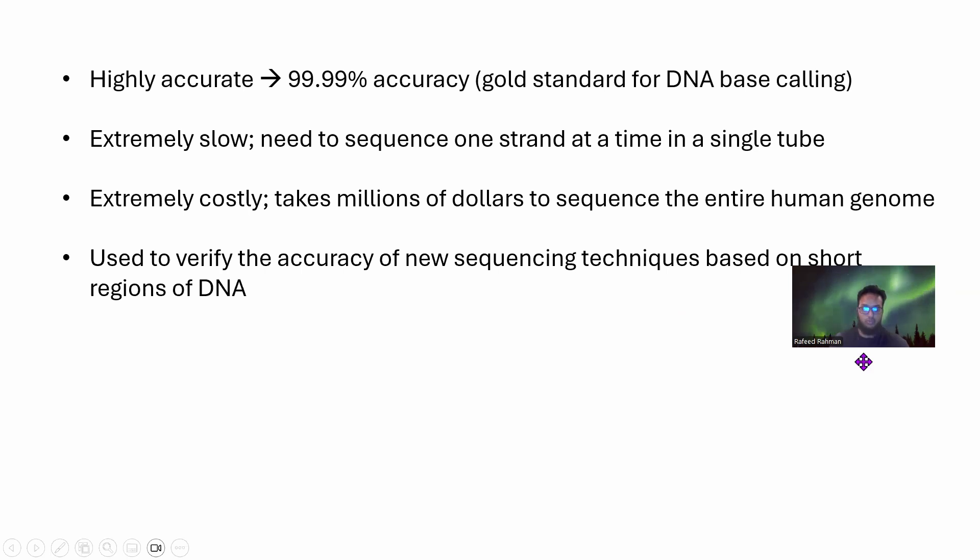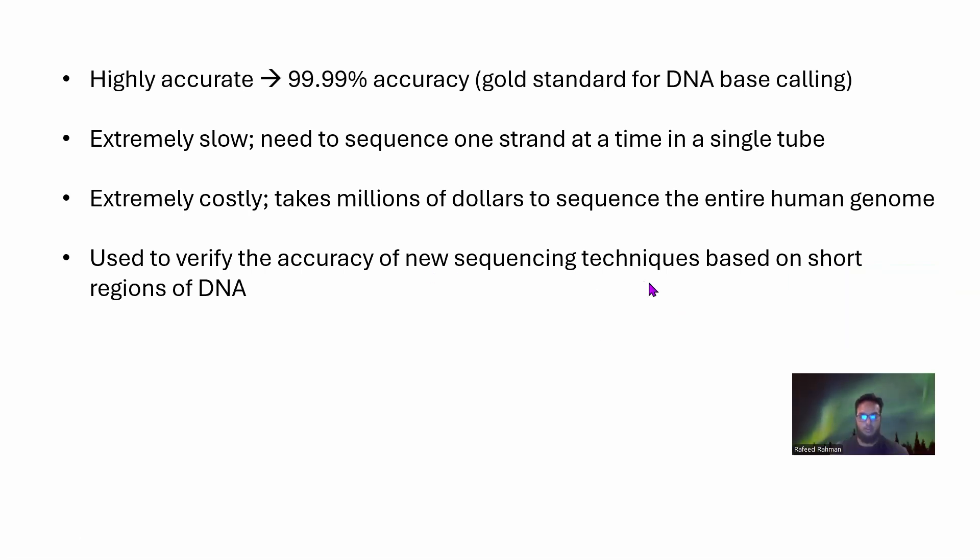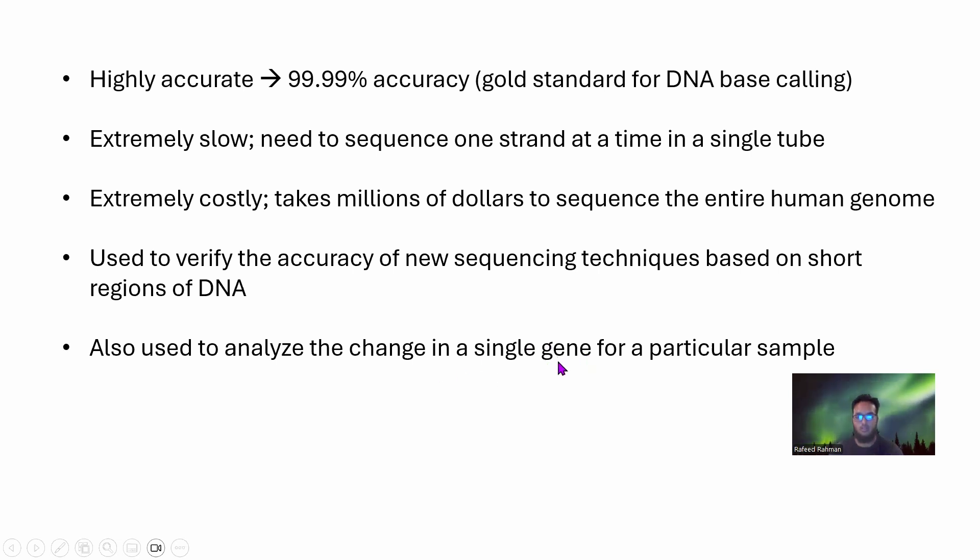Still, it's used a lot because suppose you have a new sequencing technique and want to verify its accuracy. You can use that technique on some short regions of DNA and also sequence that region using Sanger sequencing as a gold standard. Also, sometimes you want to study a single small gene and study the change of that gene for finding some special characteristic. Since a single gene is like 1000 or 3000 base pairs, you can very easily use Sanger sequencing to get an accurate estimation of what that gene looks like.